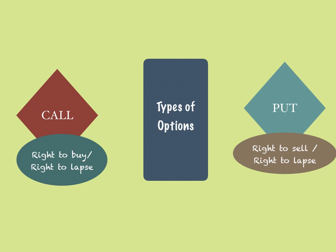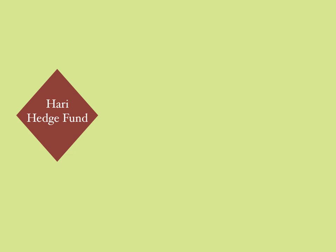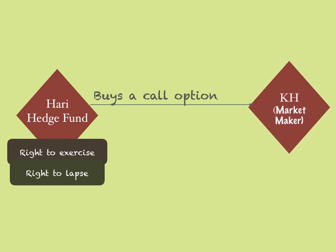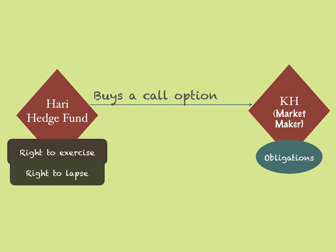The buyer has all the rights, the writer has all the obligations, and therefore the buyer always pays the premium. Let's take my favorite hedge fund, Hari Hedge Fund. Hari Hedge Fund is buying a call option from KH, who is a market maker. As the buyer, Hari Hedge Fund has the right to exercise or lapse the contract. KH, as the writer, will always receive the premium and has all obligations to do whatever the buyer wants.